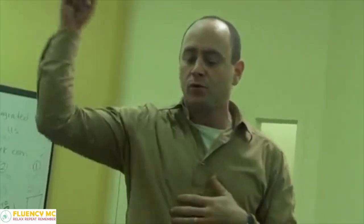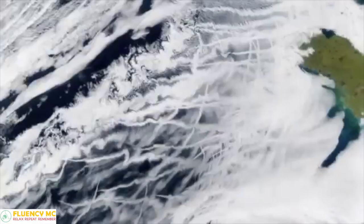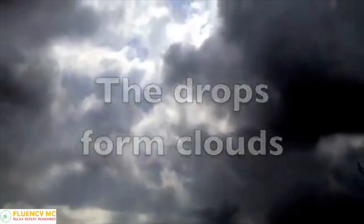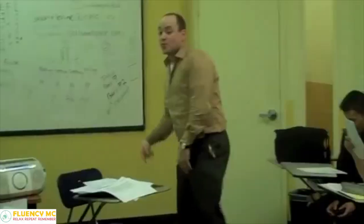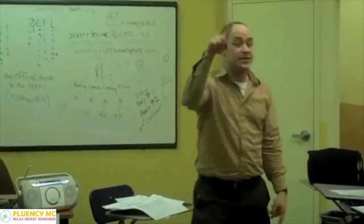There the air is colder, so the vapor condenses into droplets of liquid. The drops form clouds. When the drops get too heavy, gravity brings them down, and the water cycle goes around and around.